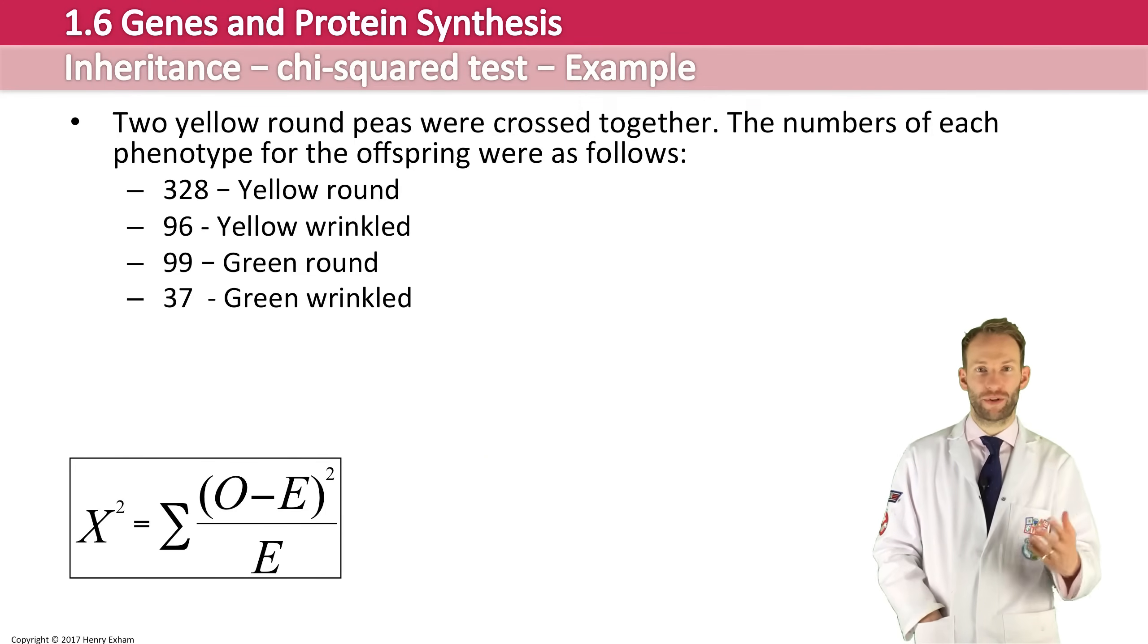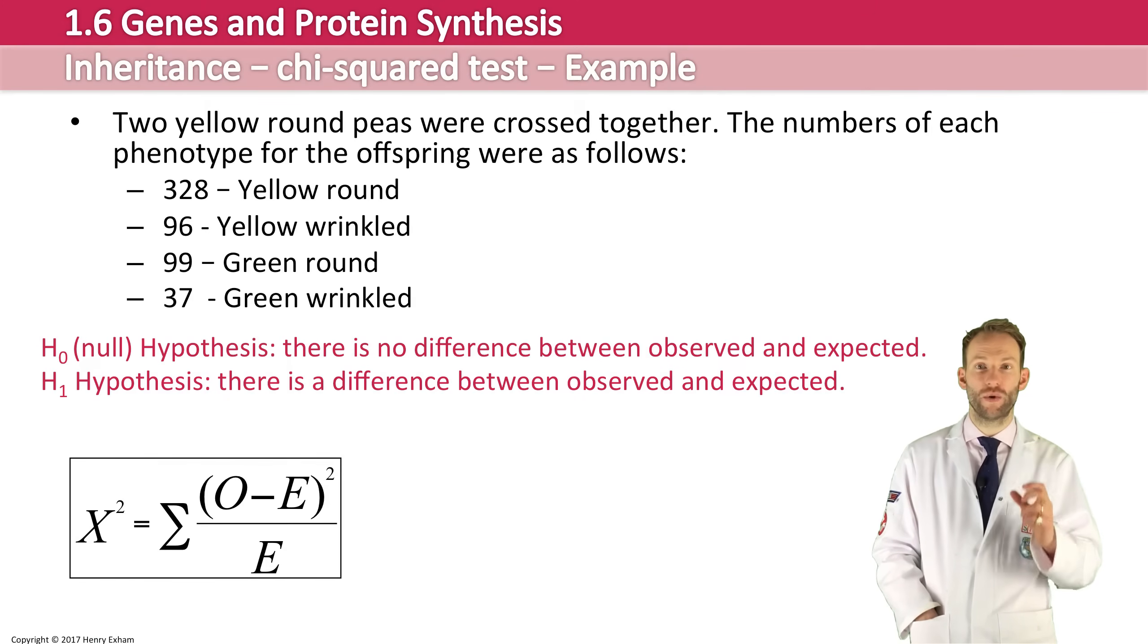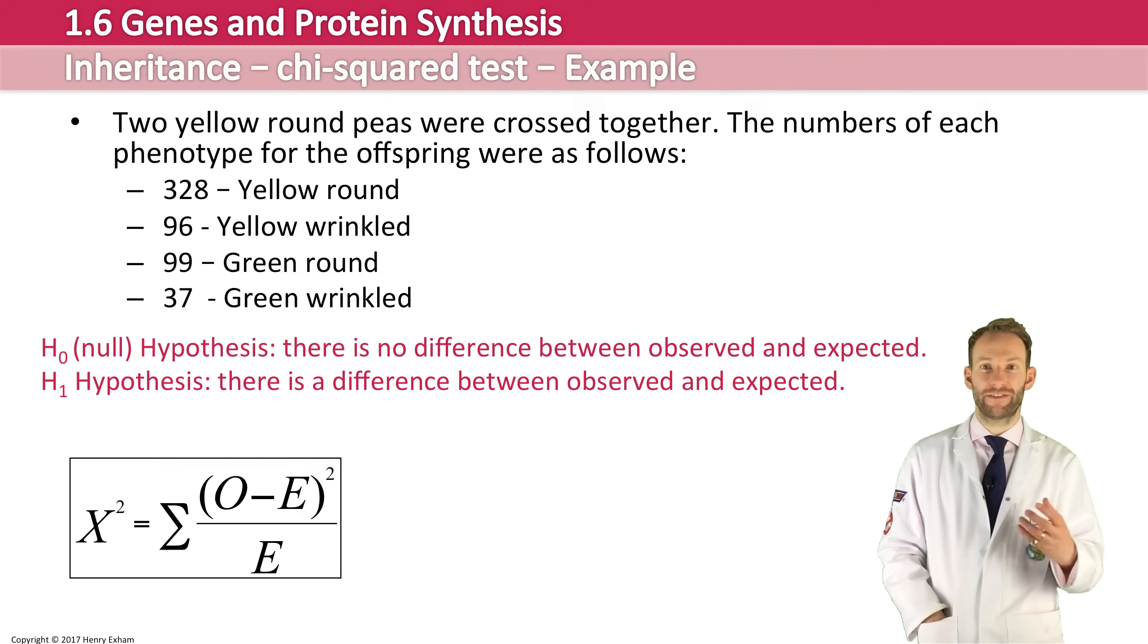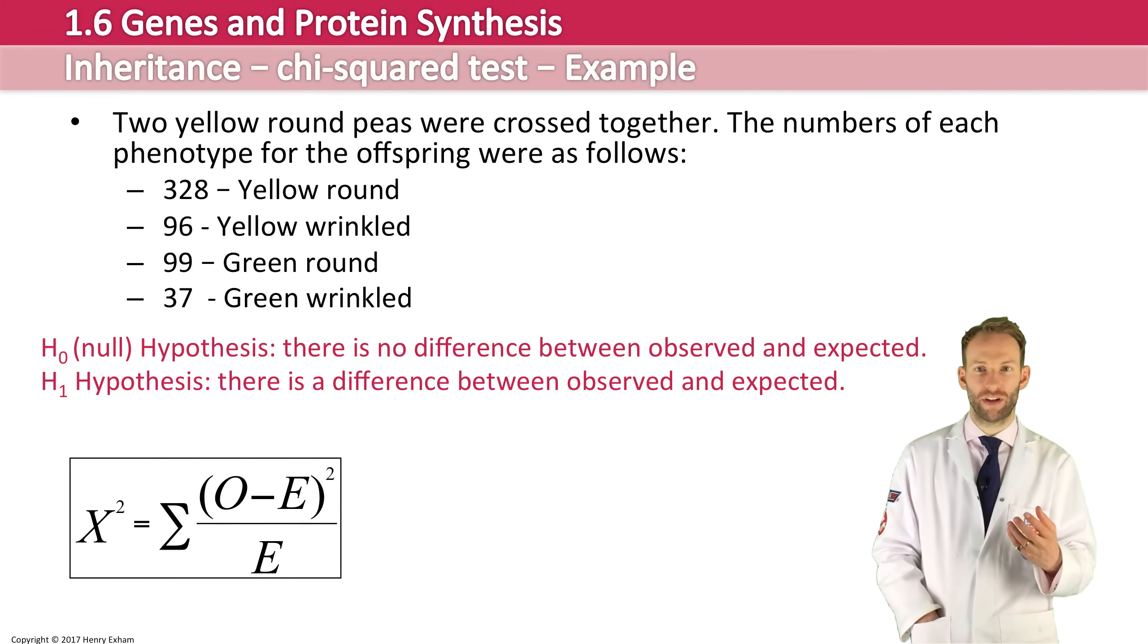Now first thing to do is to form a hypothesis. Now the null hypothesis is always the same here, which is that there is no difference between the observed and the expected. And the hypothesis is that there is a difference between observed and expected. Now when observed is the same as expected, then a chi-squared value will be zero.